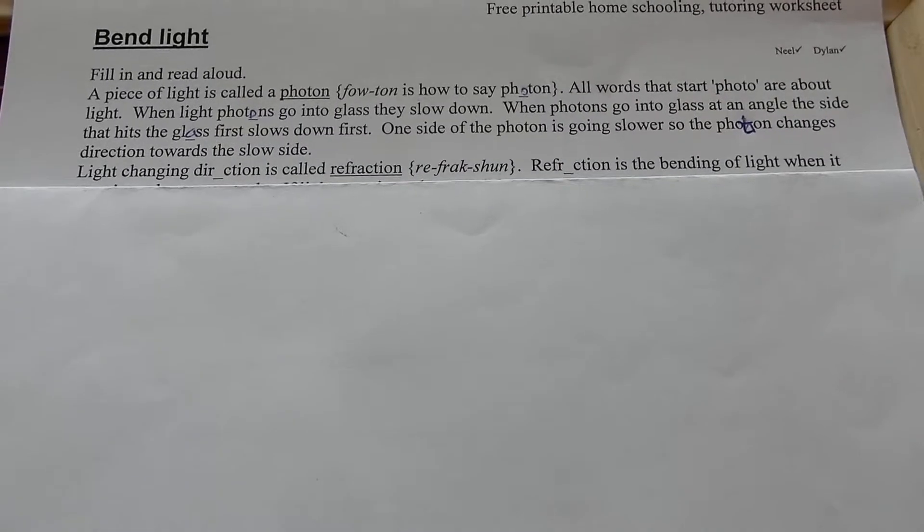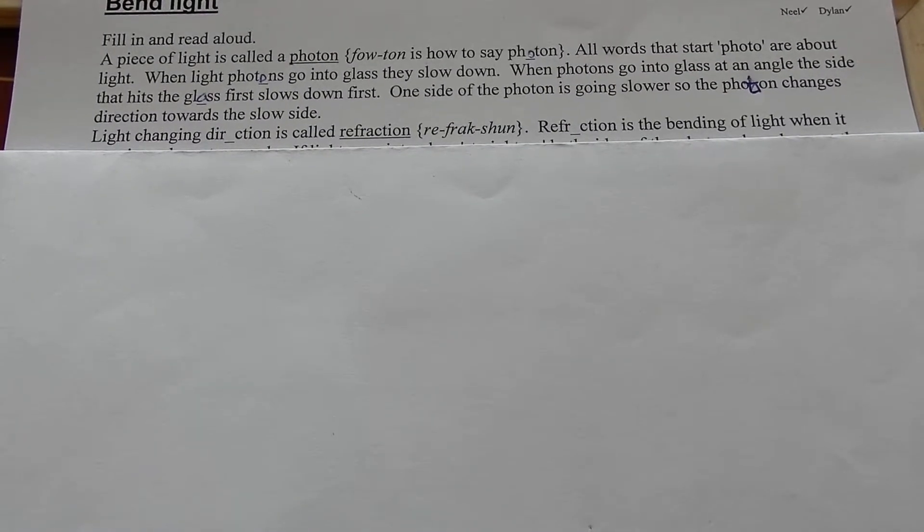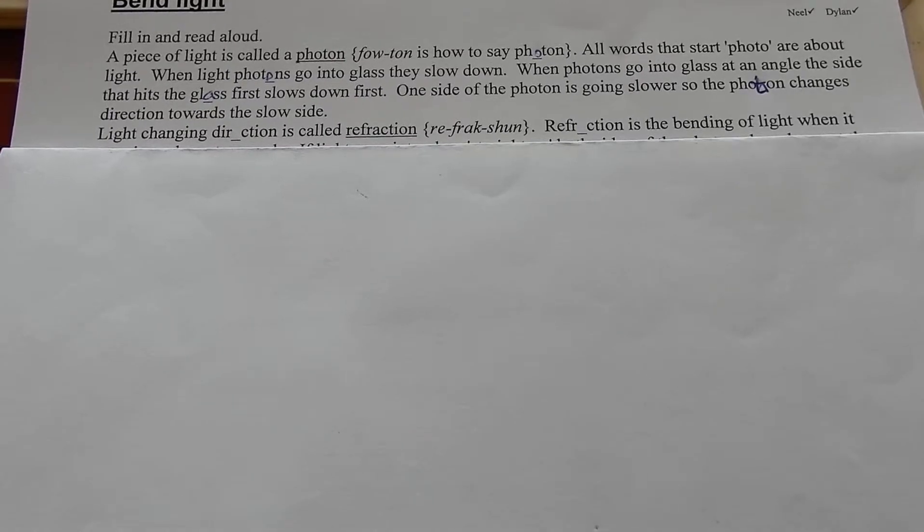One side of the photon is going slower so the photon changes direction towards the slow side, just like a tank. If one part of the tank, one track is going slow it turns that way.